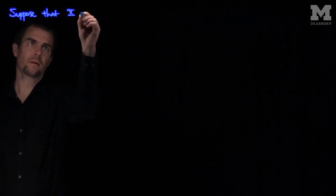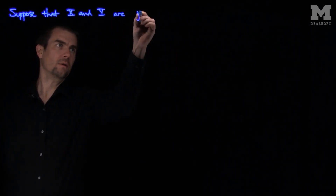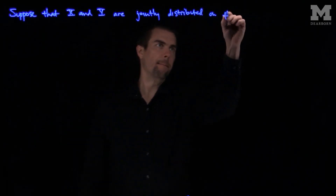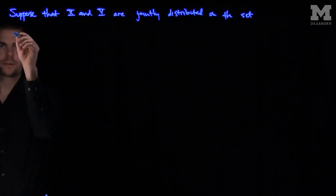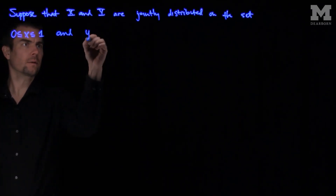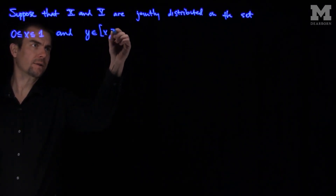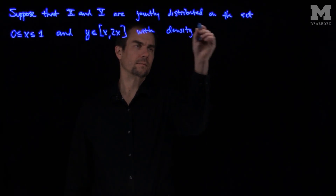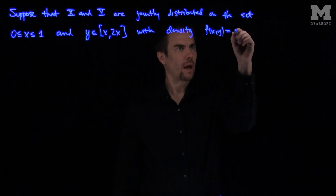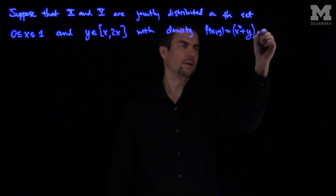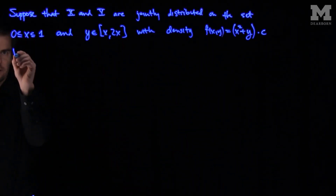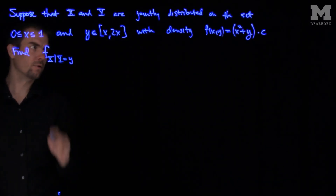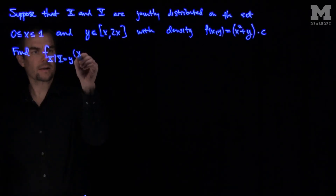Suppose that x and y are jointly distributed on the set of points where x goes between 0 and 1, and y goes between x and 2x, with density f equals x squared plus y times the constant c of proportionality. We wish to find the conditional distribution of x given that y is equal to y, at the point x knowing y.